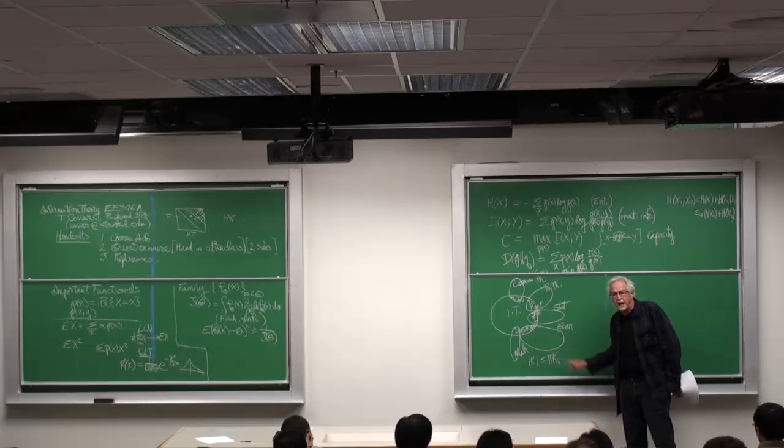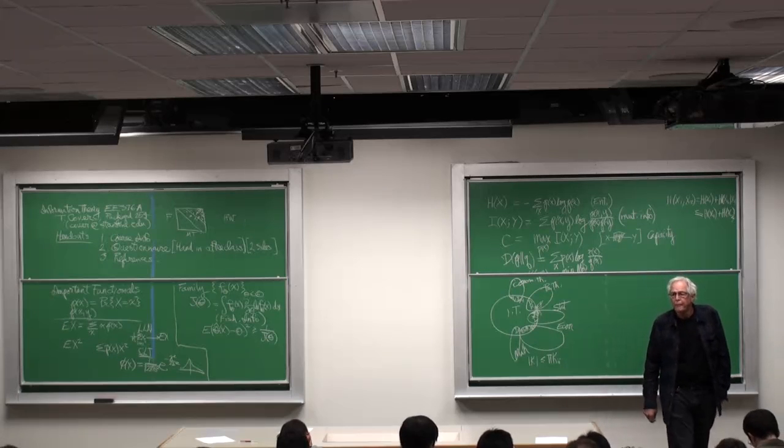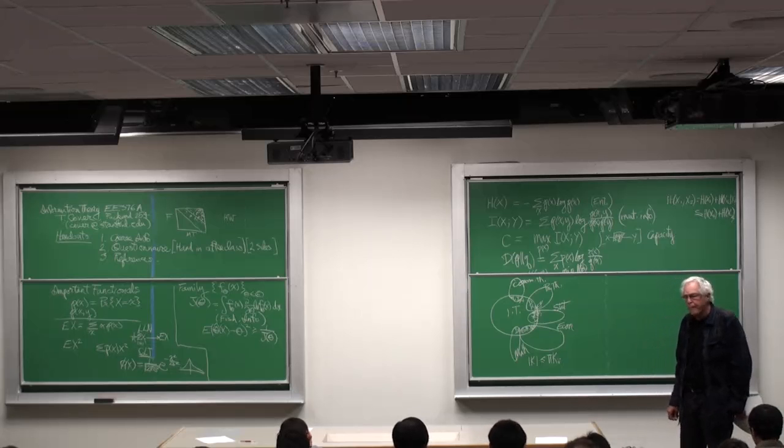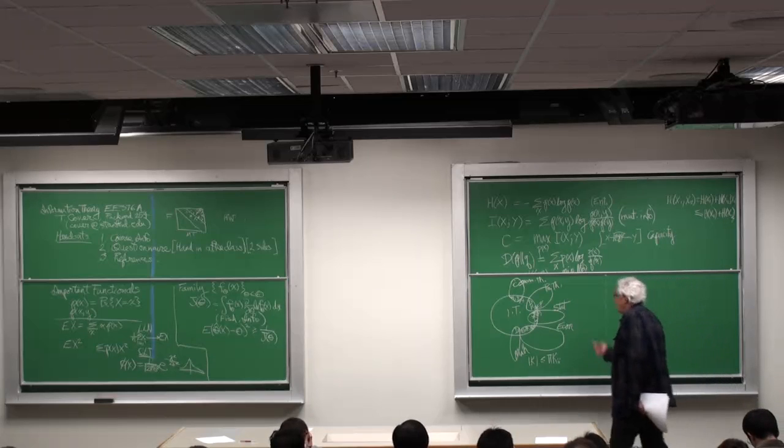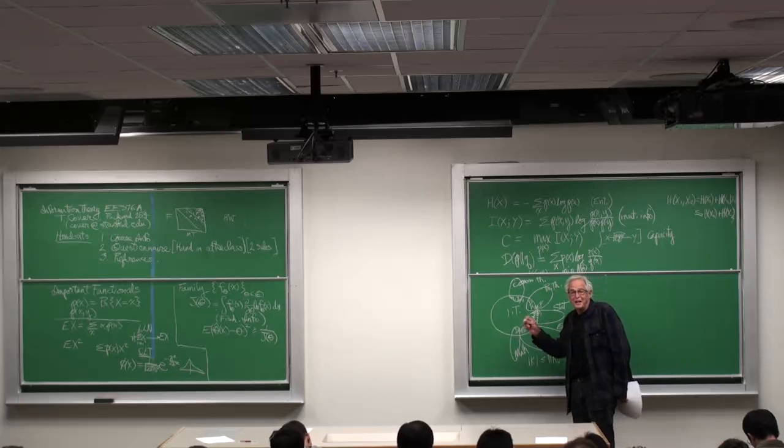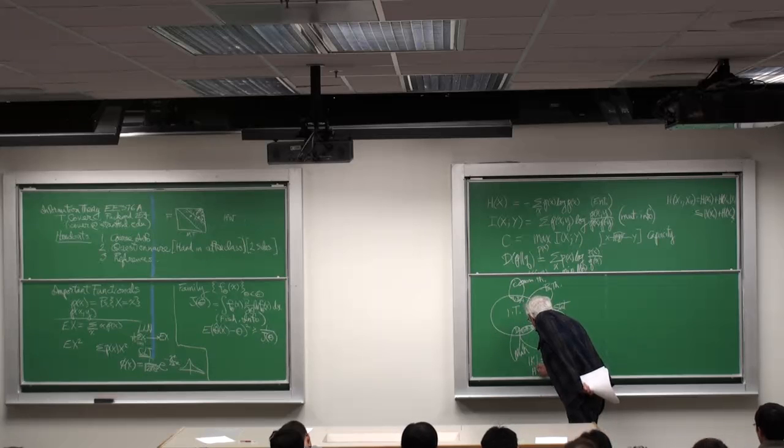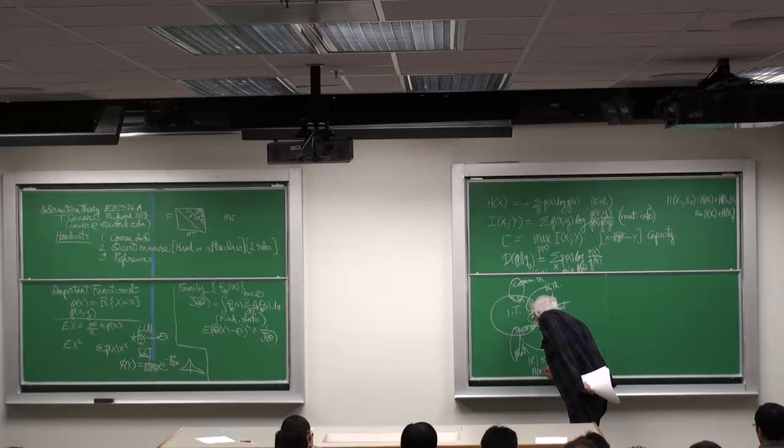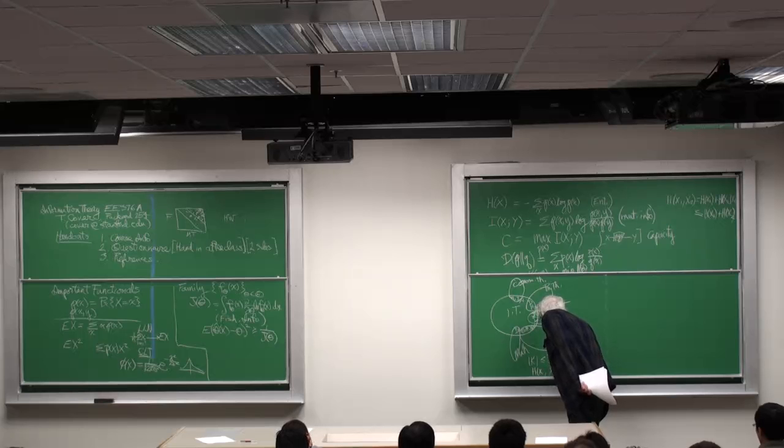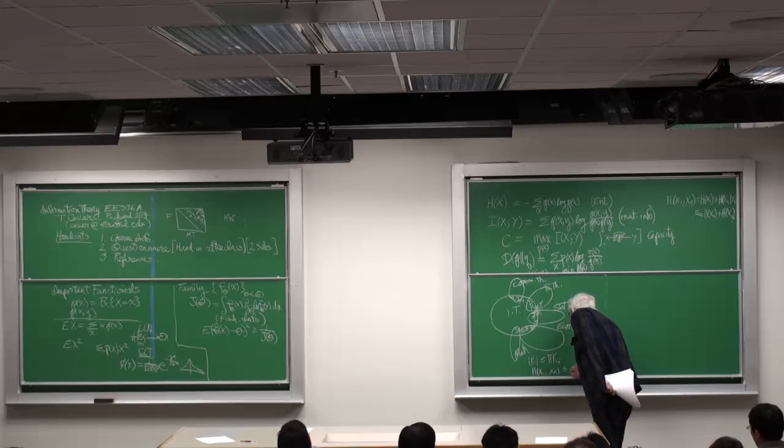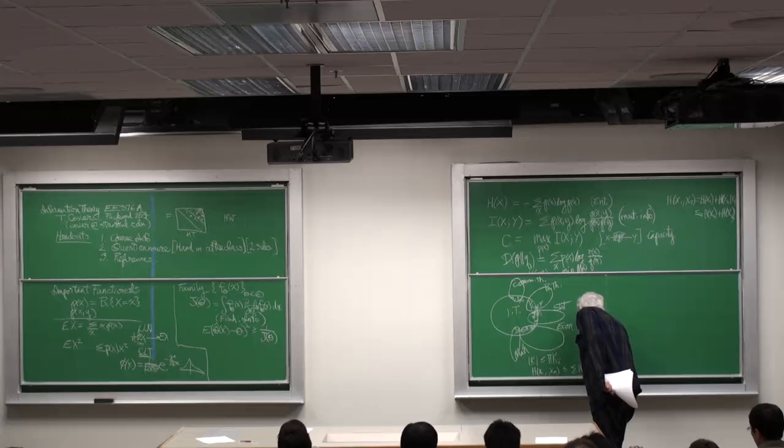The term on the diagonal, well that turns out to be exactly the statement that the entropy of X1 through Xn is less than the sum of the H of Xis.